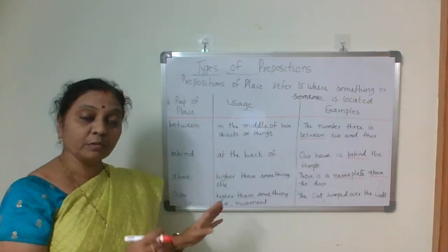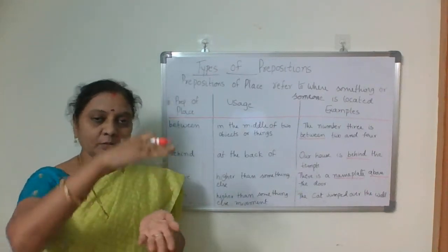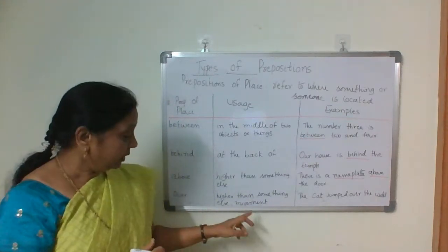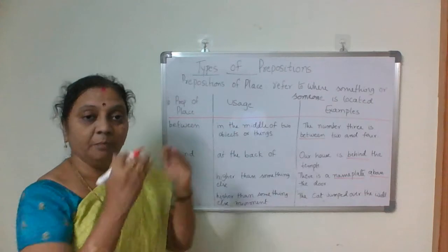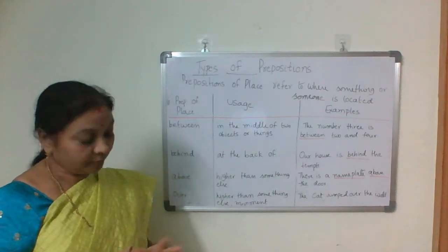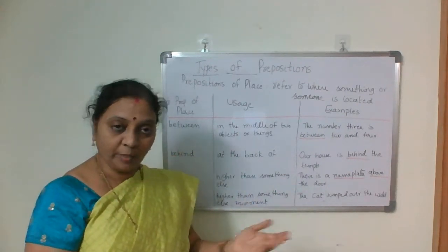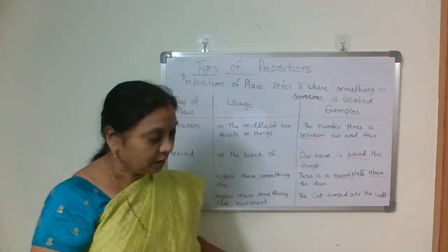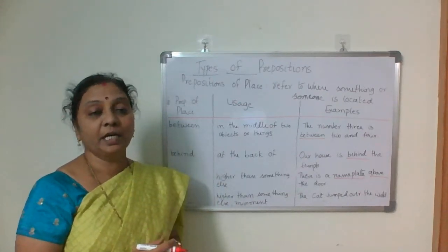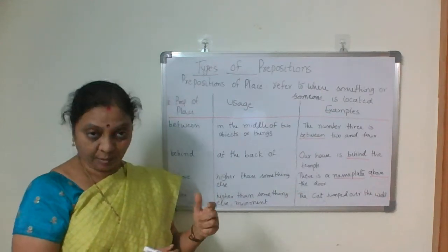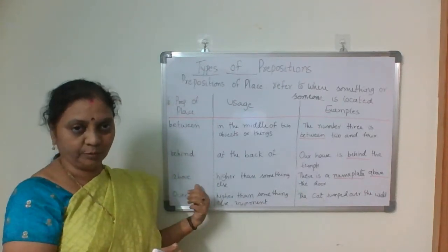Then 'over' — over also means higher than something else, but in the case of 'over' there is movement. For example: 'The cat jumped over the wall.' Not 'above the wall' because here there is movement. In 'over', movement is there — higher position but with movement. Children usually get confused between 'above' and 'over', and also 'under' and 'below', so we will discuss these four in detail with more examples.